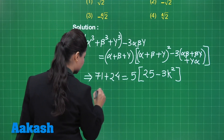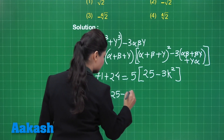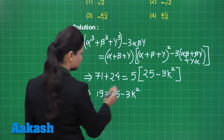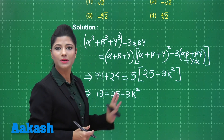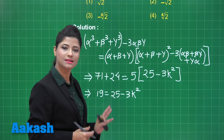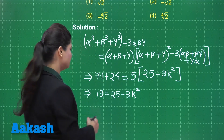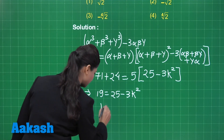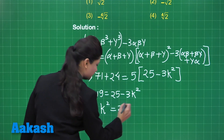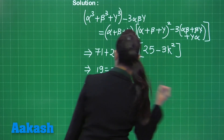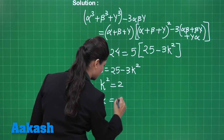We get here 19 is equal to 25 minus 3k squared. This can be further simplified as 3k squared equals 6, and that reduces to k squared is equal to 2. So we have obtained here k squared is equal to 2.